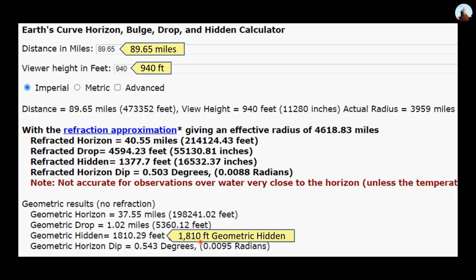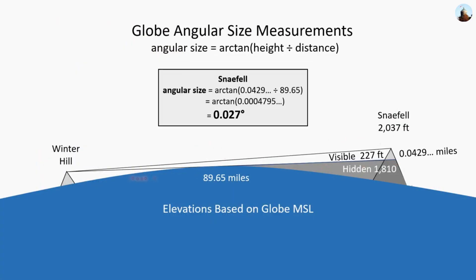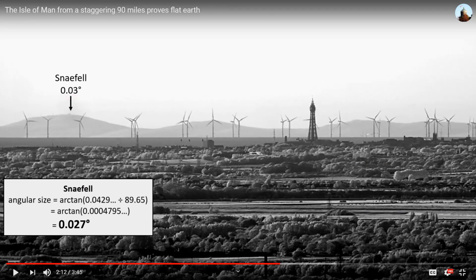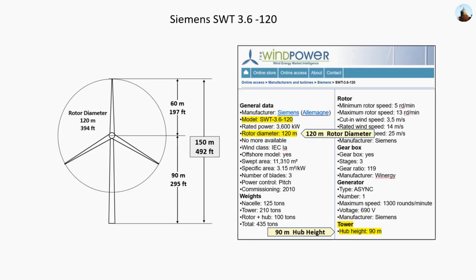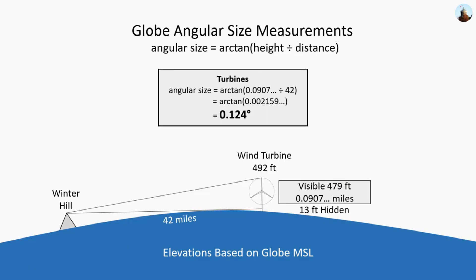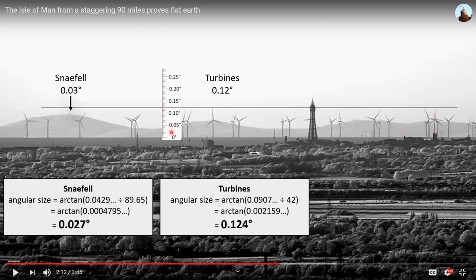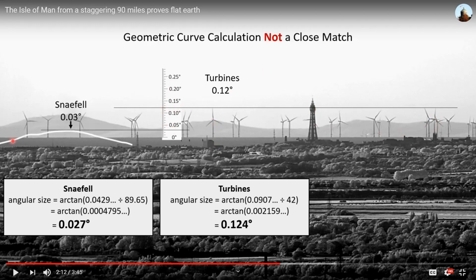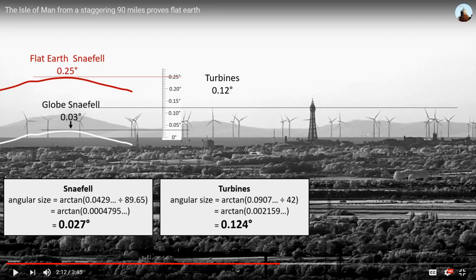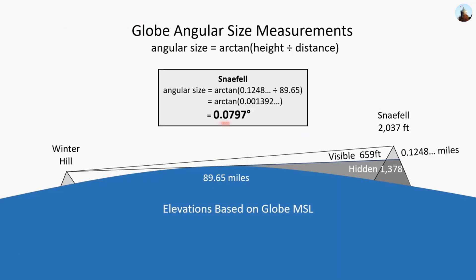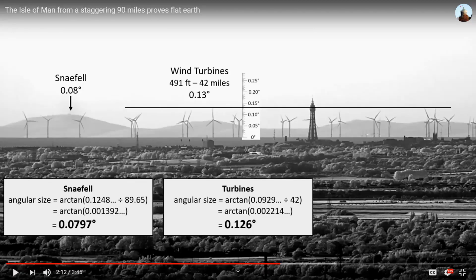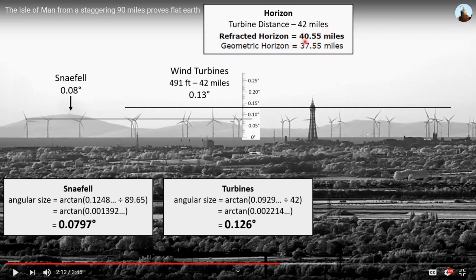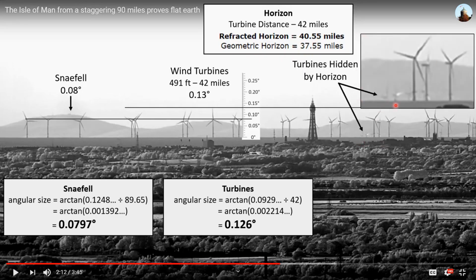Variations on the same theme are also presented where distant mountains are analyzed against a nearer reference point such as a tower. Calculations are made with Euclidean geometry and comparisons are made between a flat plane and a globe. Heights and distances are explained, and lines are drawn on the photo to represent key concepts such as observer level and the horizon. We are told that if the earth really was flat, distant objects should be significantly higher than what we see. The same logic applied to the globe declares the globe to be the winner.